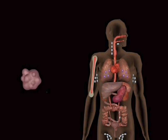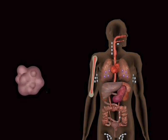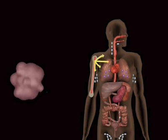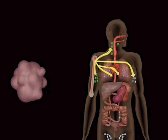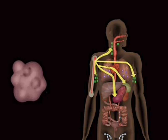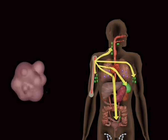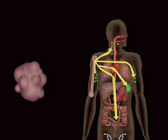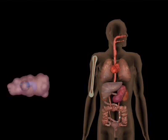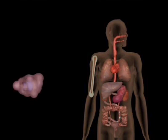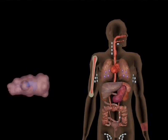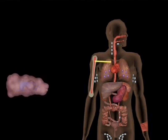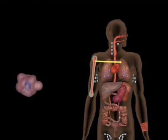Macrophages fall into two categories: fixed and mobile. Fixed macrophages move from the bone marrow to their own secondary lymphoid tissue and remain there. The fixed macrophages also go to non-lymphoid tissue. Mobile macrophages travel from the bone marrow through the bloodstream, and some return to the local lymph nodes through the lymphatic network.